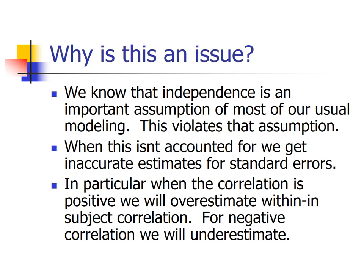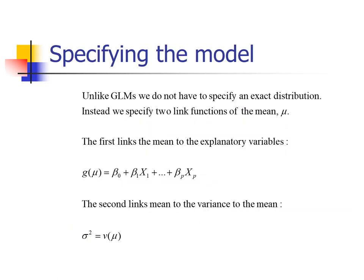We know independence is an important assumption of everything we've studied up until now, and having correlations violates this assumption. When we don't account for this dependency in our data, we get inaccurate estimates for our standard errors — and since all our inference is based on standard errors, that means our confidence intervals are wrong, our p-values are wrong, and our decisions are wrong. Unlike generalized linear models, GEEs do not require specifying an exact distribution. Instead, we specify two link functions: the first links the mean to the explanatory variables, and the second links the variance to the mean.